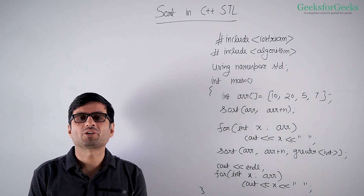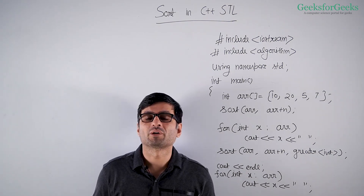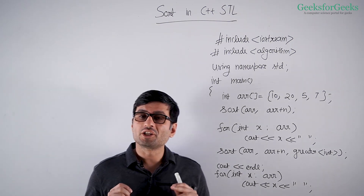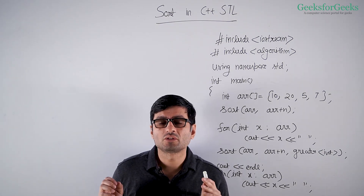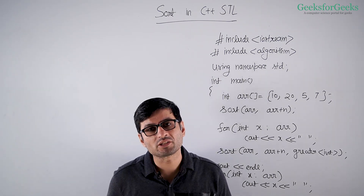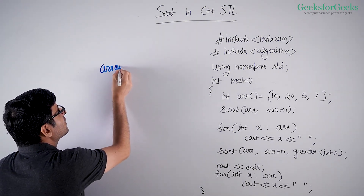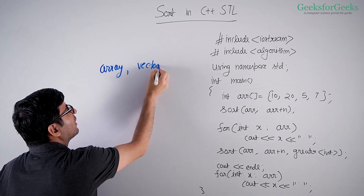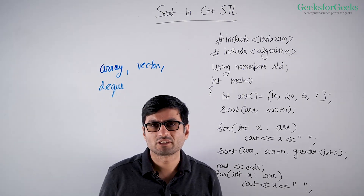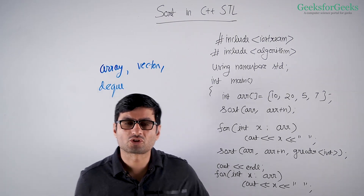In this video we are going to talk about sort in C++ STL. Sort is a general purpose library function for sorting any types of input. It is mainly used for sorting data stored in containers which allow random access. Example containers which allow random access are arrays, vectors, and deque. Random access means you can access any item in constant time.